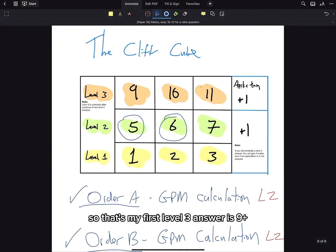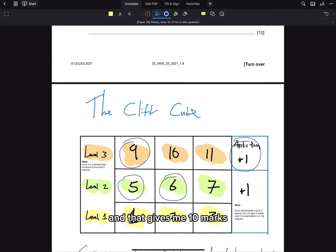So that's my first level 3 answer, which is 9, plus my context on the application, plus 1, and that gives me 10 marks.